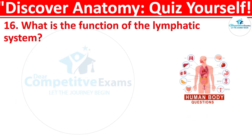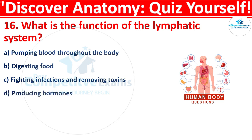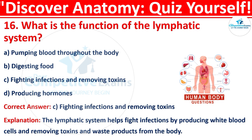Question 16: What is the function of the lymphatic system? Your options are: pumping blood throughout the body, digesting food, fighting infections and removing toxins, or producing hormones. The correct answer is C, that is fighting infections and removing toxins. The lymphatic system helps to fight infections by producing white blood cells and removing toxins and waste products from the body.